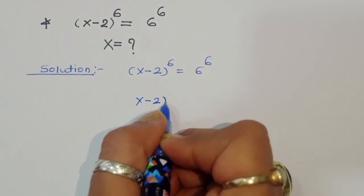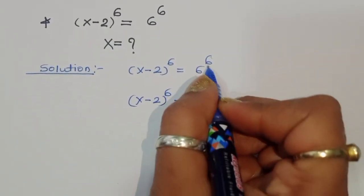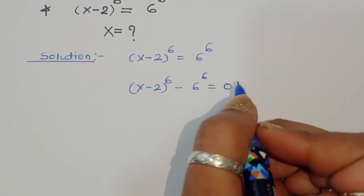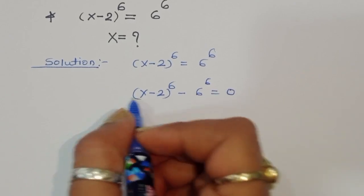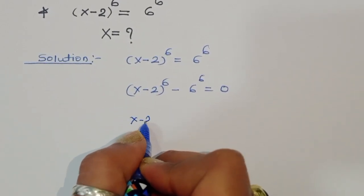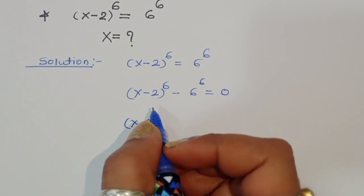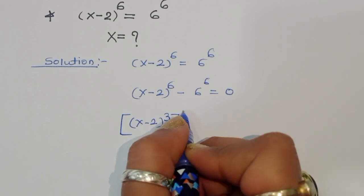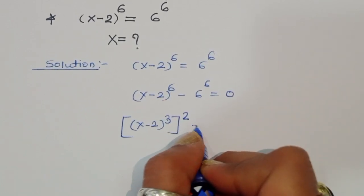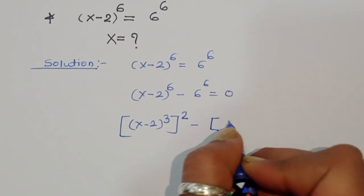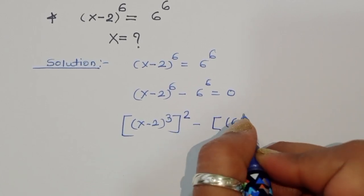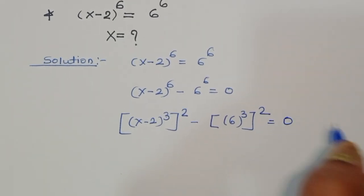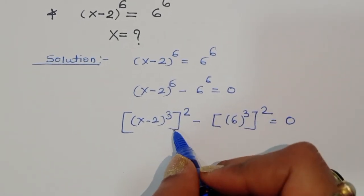We rewrite as (x minus 2)^6 minus 6^6 is equal to 0. Now we can write (x minus 2)^6 as [(x minus 2)^3]^2 and 6^6 as [6^3]^2, giving us [(x minus 2)^3]^2 minus [6^3]^2 is equal to 0. You can see this is the form of a² minus b².